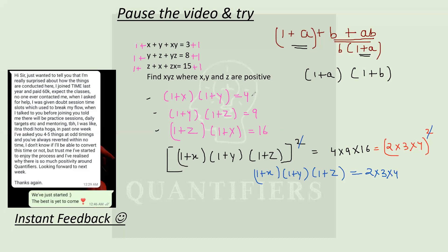Now students, look at the first equation — one plus X into one plus Y is equal to four. Since I know this product is four, I can calculate the value of one plus Z. So one plus Z equals 24 divided by four. I'll get one plus Z equal to two into three, that is six. So from here, Z is equal to five.